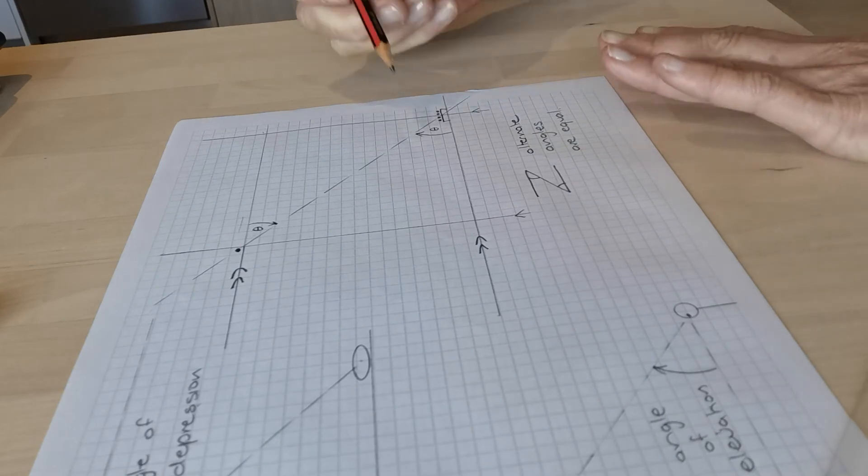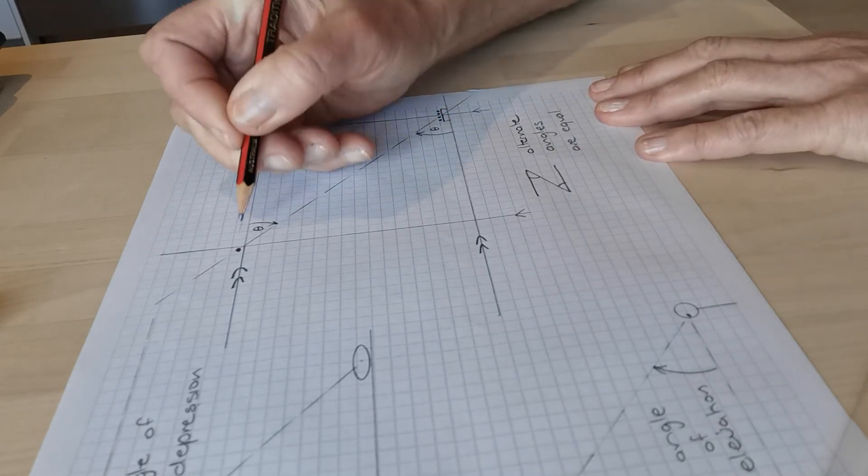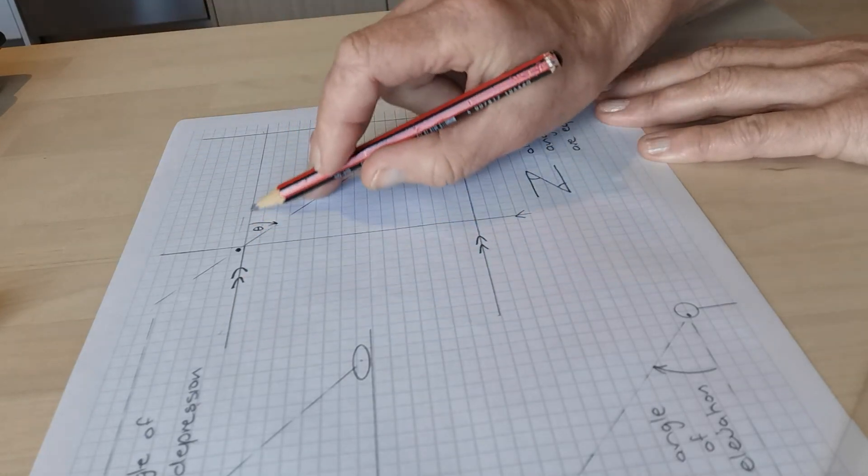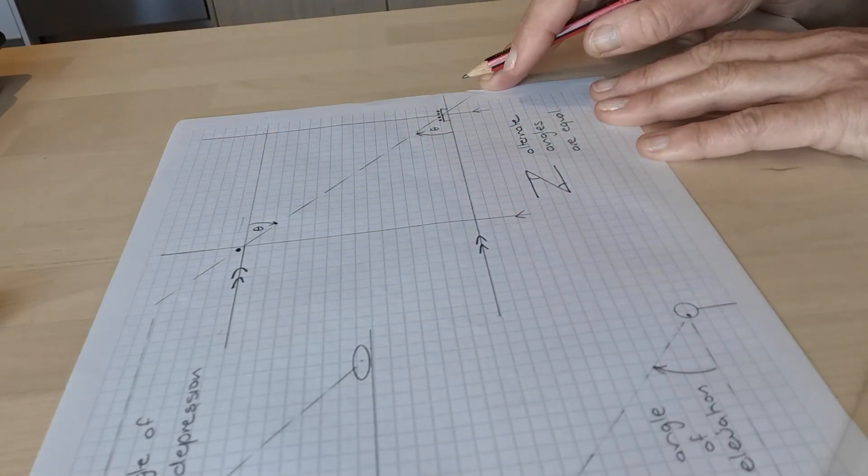So if they happen simultaneously, and they often do, the angle of elevation will be equal to the angle of depression because you are using the horizontal lines in both cases.